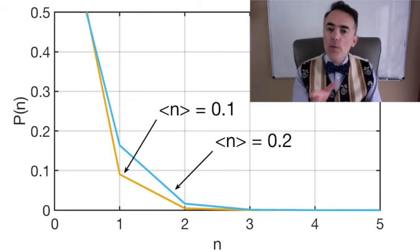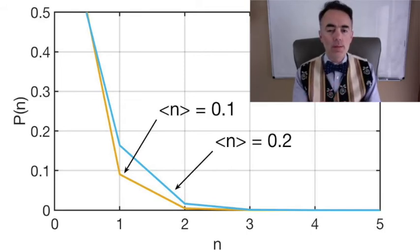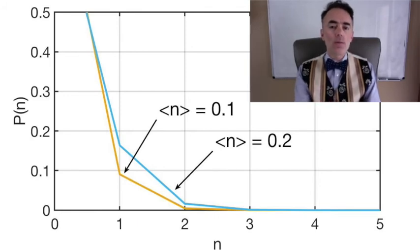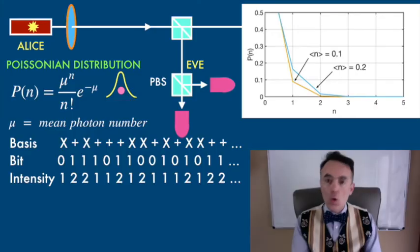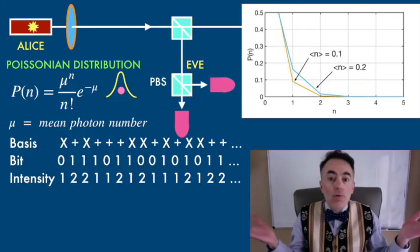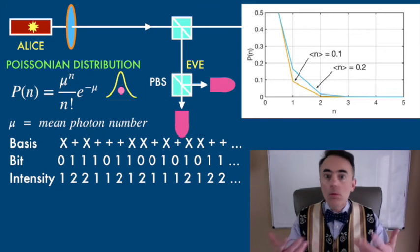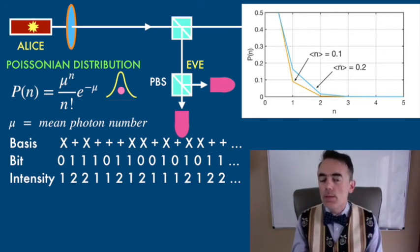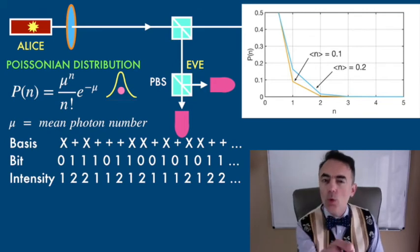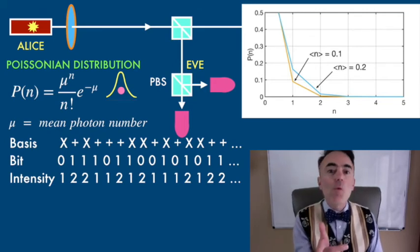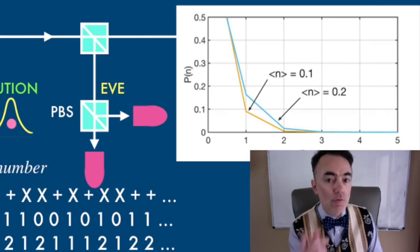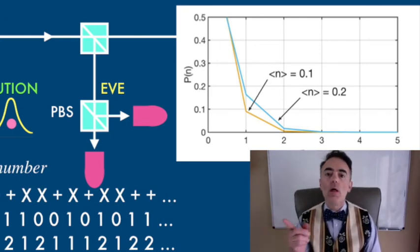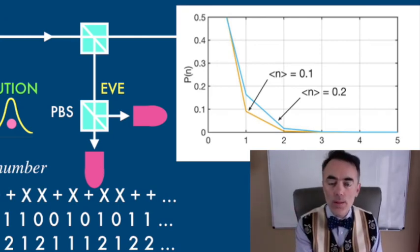Neither Eve nor Bob will know the intensities Alice chose; only Alice knows which intensities she chose for each of the pulses. So Eve will only see that she gets photons that might come from multi-photon pulses without knowing about the intensity Alice chose for that particular pulse. But because it is more likely to have multi-photons from a high intensity pulse than from a low intensity pulse, Eve will be perturbing more the high intensity than the low intensity pulses.